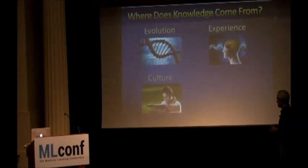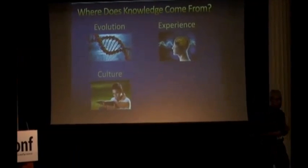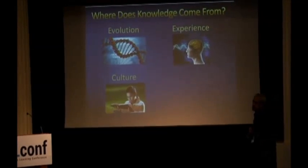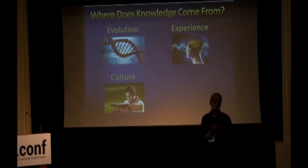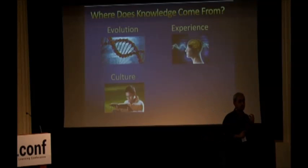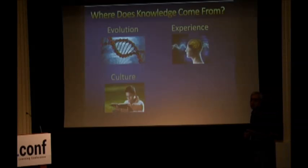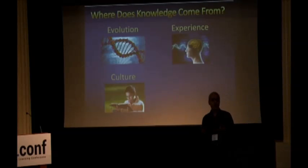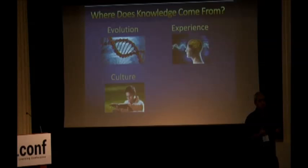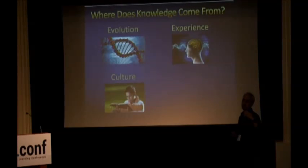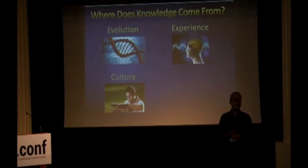Let me start with a very simple question: where does knowledge come from? In the past, it came from three places. Evolution — that's the knowledge encoded in your DNA. Experience — that's the knowledge encoded in your synapses. And culture — the knowledge you acquire by talking with people, reading books, and so on. Each of these was a major development in the story of life on Earth.